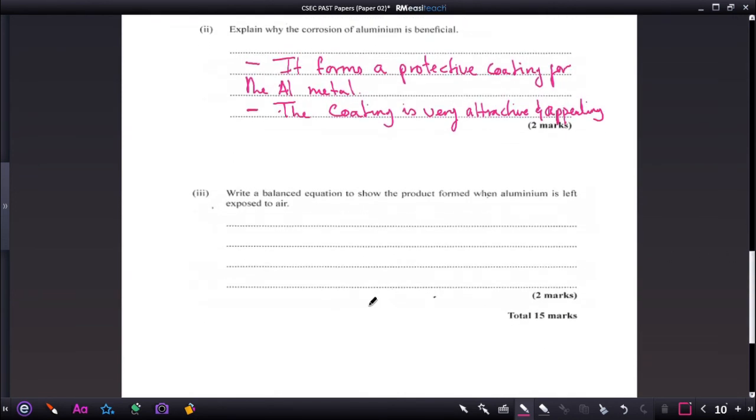Part 3. Write a balanced equation to show the product formed when aluminum is left exposed to air. When aluminum is left exposed to air, then this is the reaction. Aluminum solid plus oxygen, which is the air we are talking about, gas. It is important to have your state symbols. And that forms aluminum oxide, Al2O3 solid. Let us balance the equation. So we have on the right hand side of the equation, there are two aluminums and three oxygen. So let us put a three right here, and a two goes right there. So a four should be here to balance the equation.